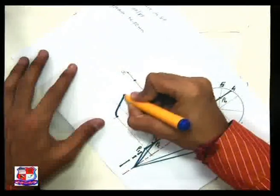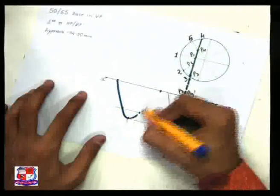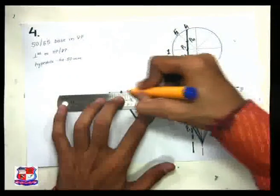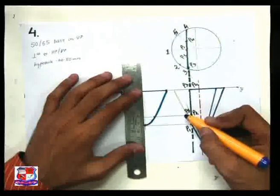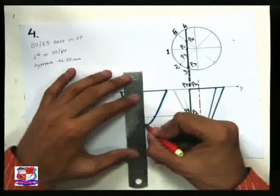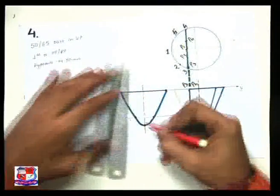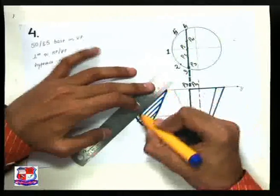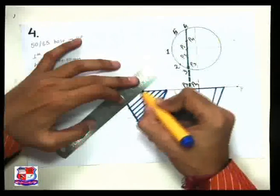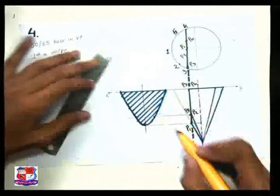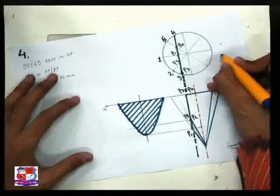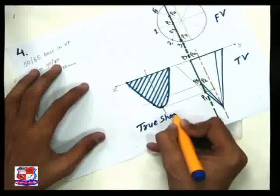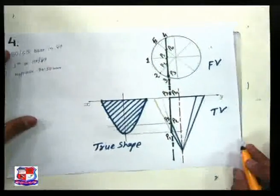Join all points with a smooth curve — this smooth curve is a hyperbolic shape. Its hyperbola has an axis or height of 50 mm. This is the axis of the hyperbola. Draw cross-section lines in the hyperbolic area. Write the name of the views: this is the front view, this is the top view, and this is the true shape of the section.